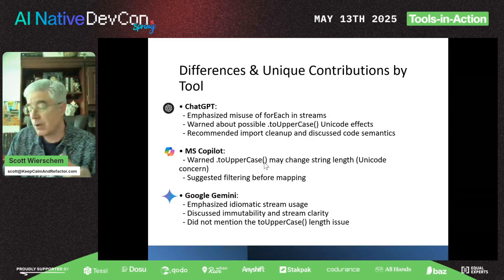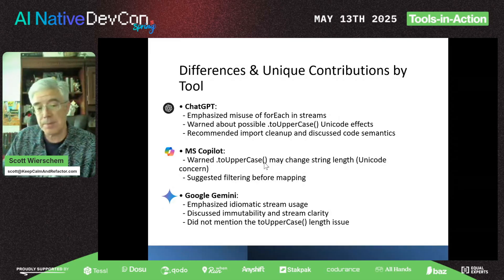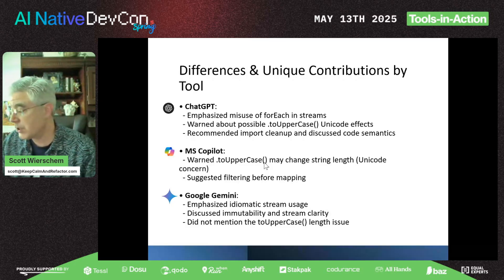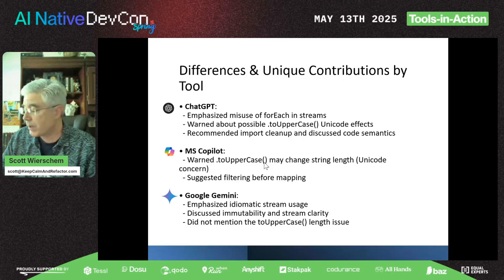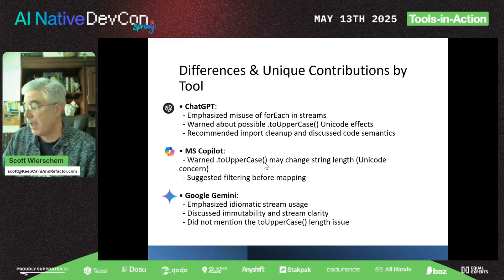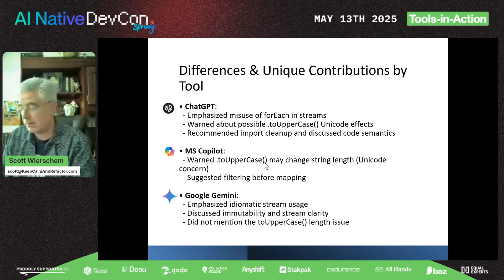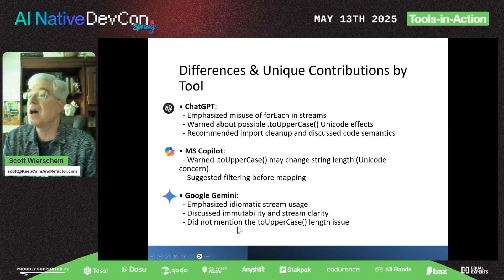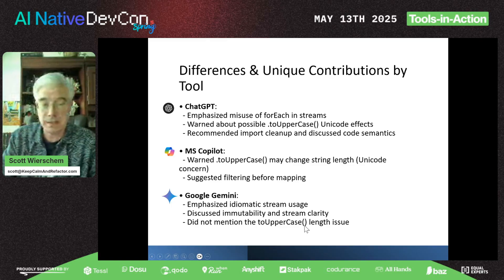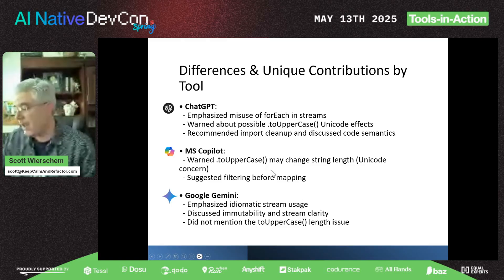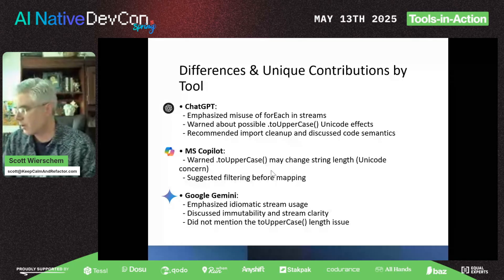Next we have Google Gemini. It points out that you should use collect rather than for-each because that's the proper idiomatic approach in Java streams. It also noted that while it's good to avoid side effects in code, some users might expect them based on how the function was named. And ChatGPT was very proud to point out that Google Gemini did not mention the toUpperCase length issue — a little strutting there.